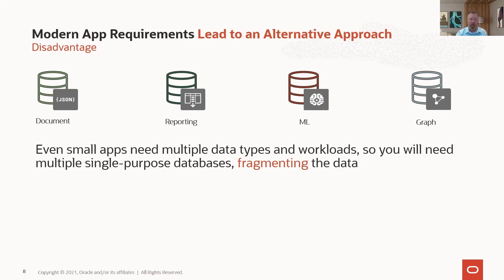Even a small app may start with just a document database, maybe a document and a reporting database. But as business requirements change, a developer has to pull in machine learning, graphic data, different types of document data from different sources. That means introducing new single-purpose databases because the original ones don't accommodate that. Now I'm dealing with four different types, and everything is fragmented across these different single-purpose databases.